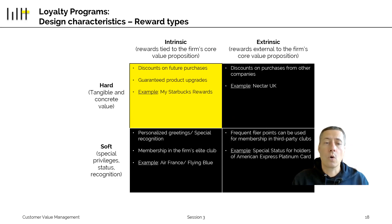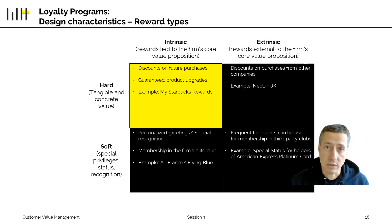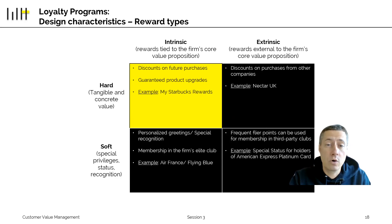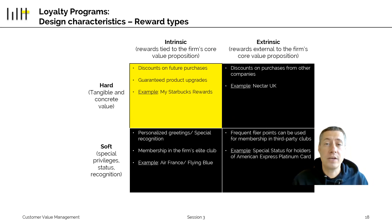Loyalty programs that only work with hard intrinsic rewards are very similar to volume price discounts — getting shampoo cheaper when you buy 10 bottles at once instead of one. A loyalty program with hard intrinsic rewards is exactly the same system, except you do not need to purchase all 10 coffees in one go; you can split the purchases over time.